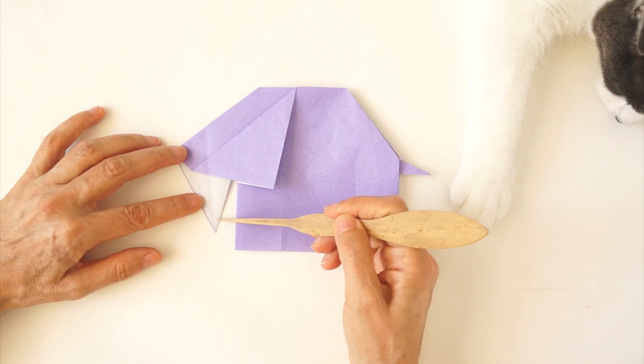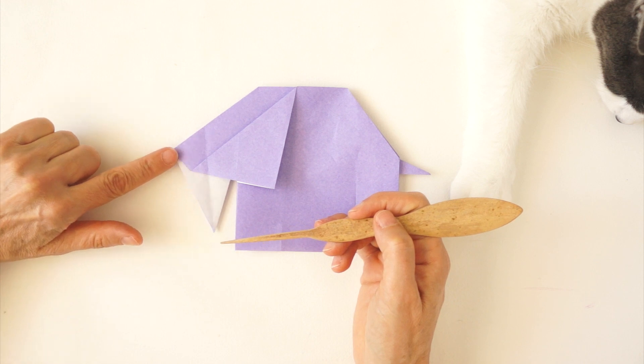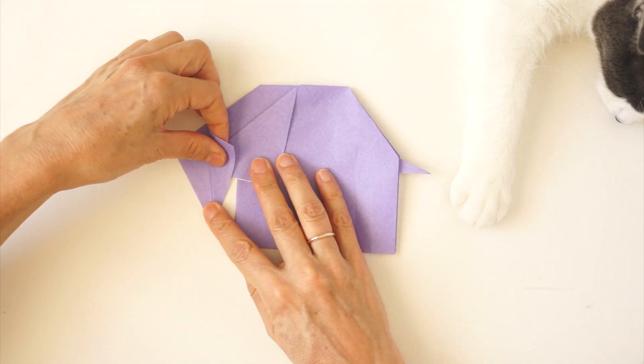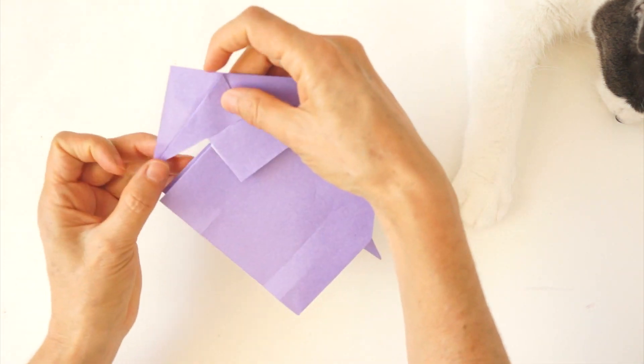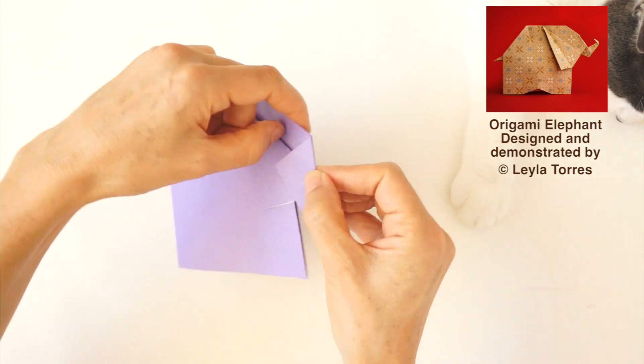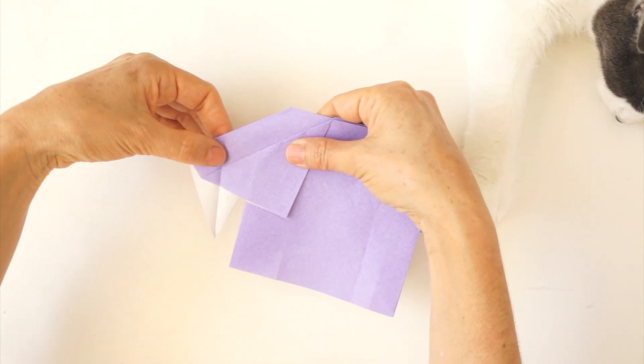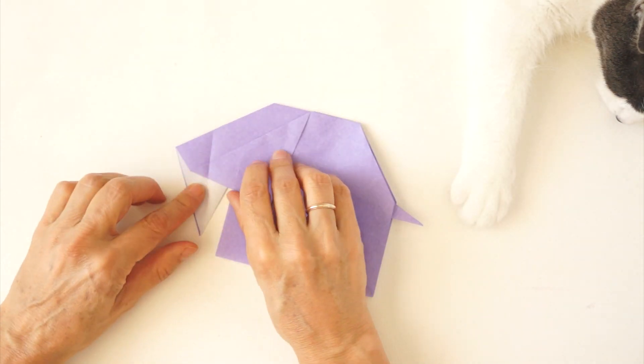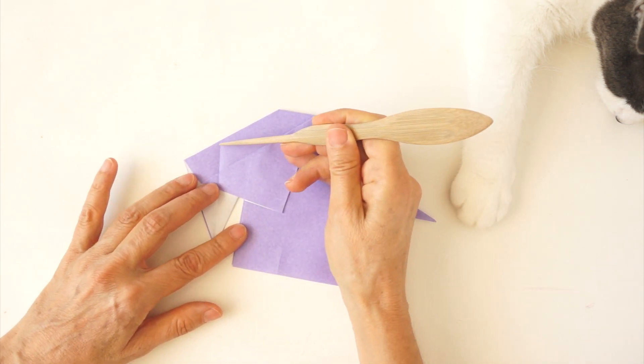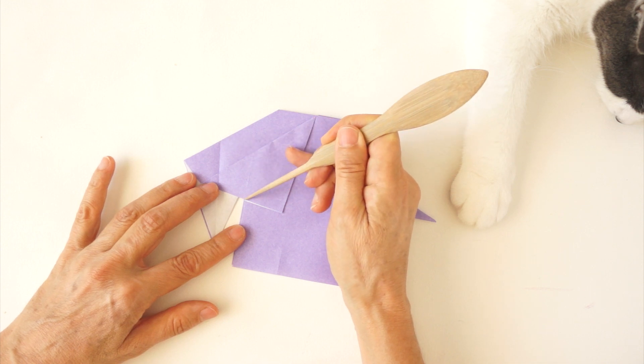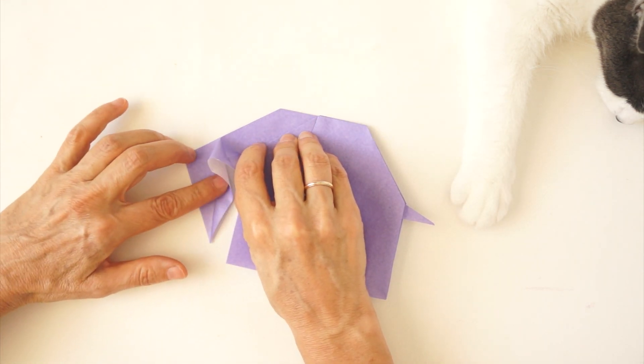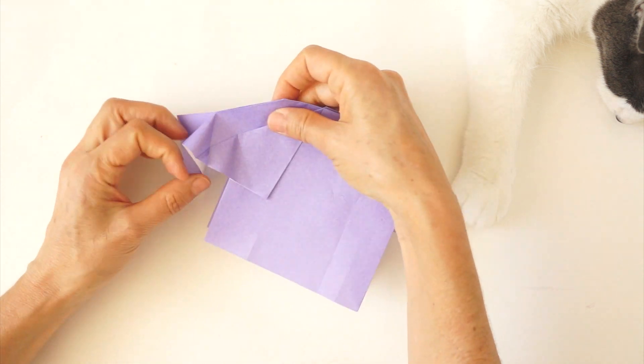We are going to bisect this angle. Bring this edge to match this edge. Same on the back. Unfold. Now we are going to inside reverse fold along the previous fold. But we are going to create a new fold from this point down to this corner. Inside reverse this. And we just keep going. Same.